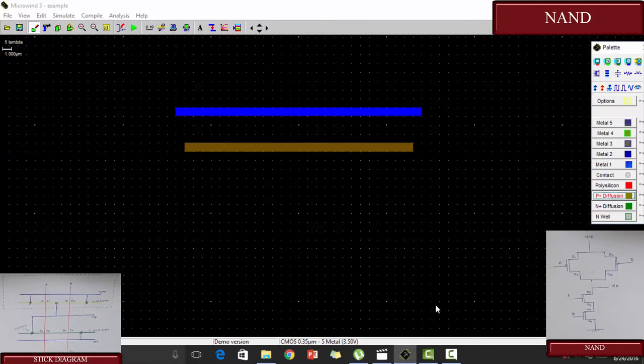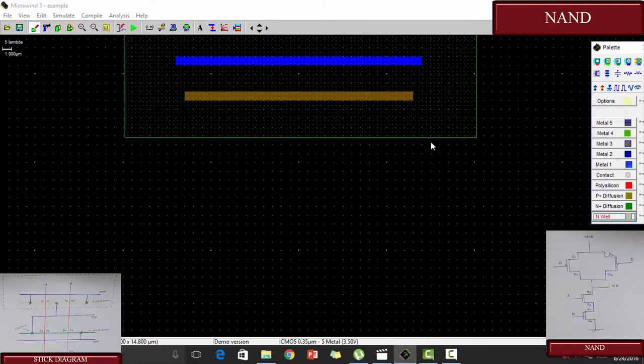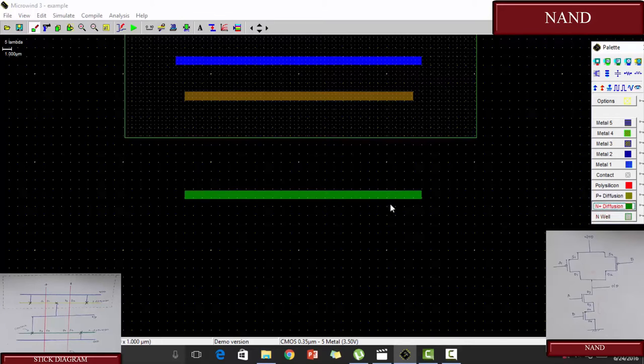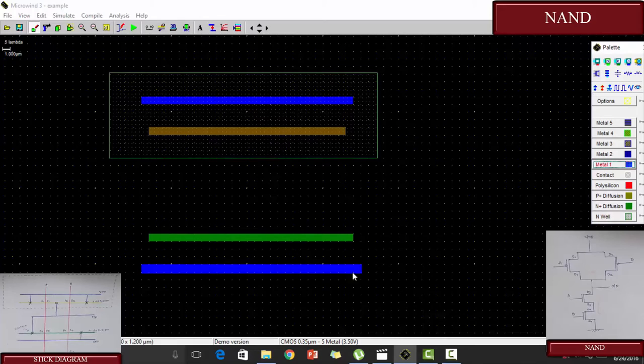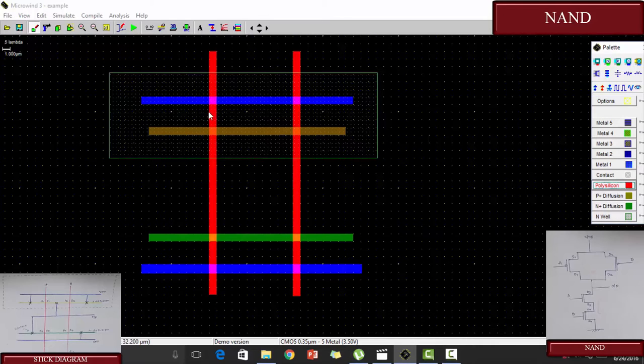So the P diffusion is constructed. Now we are going to draw N diffusion. This is the N diffusion. We will draw another metal layer. The metal layer is constructed.